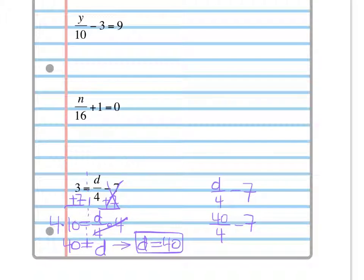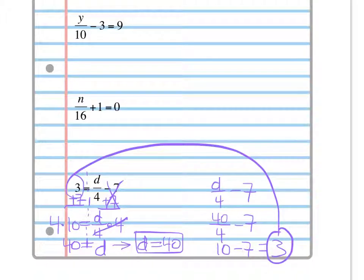So I'm going to rewrite it as 40 over 4 minus 7. Well, 40 over 4 is 10. 4 goes into 40, 10 times. 10 minus 7 is 3. Now I just want to see, does this answer match with this answer here? And it does. So my answer is correct. We're going to move on to the other side.